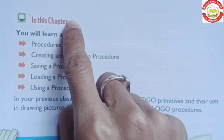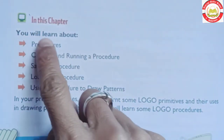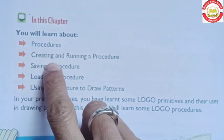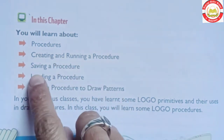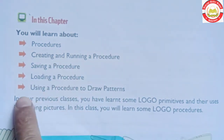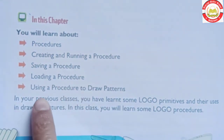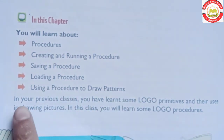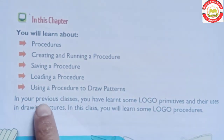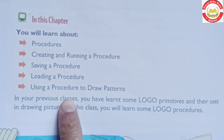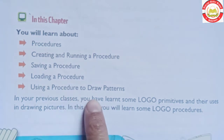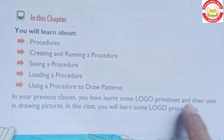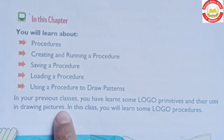In this chapter, you will learn about procedures: creating and running a procedure, saving a procedure, loading a procedure, and using a procedure to draw patterns. In your previous classes, you have learned some Logo parameters and their uses in drawing pictures.